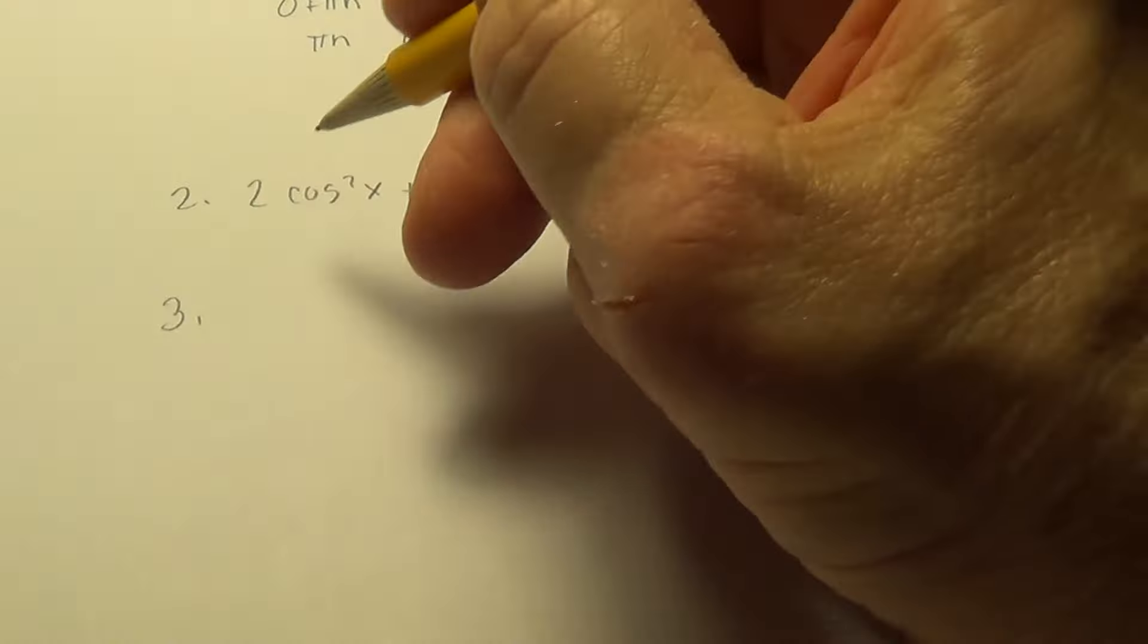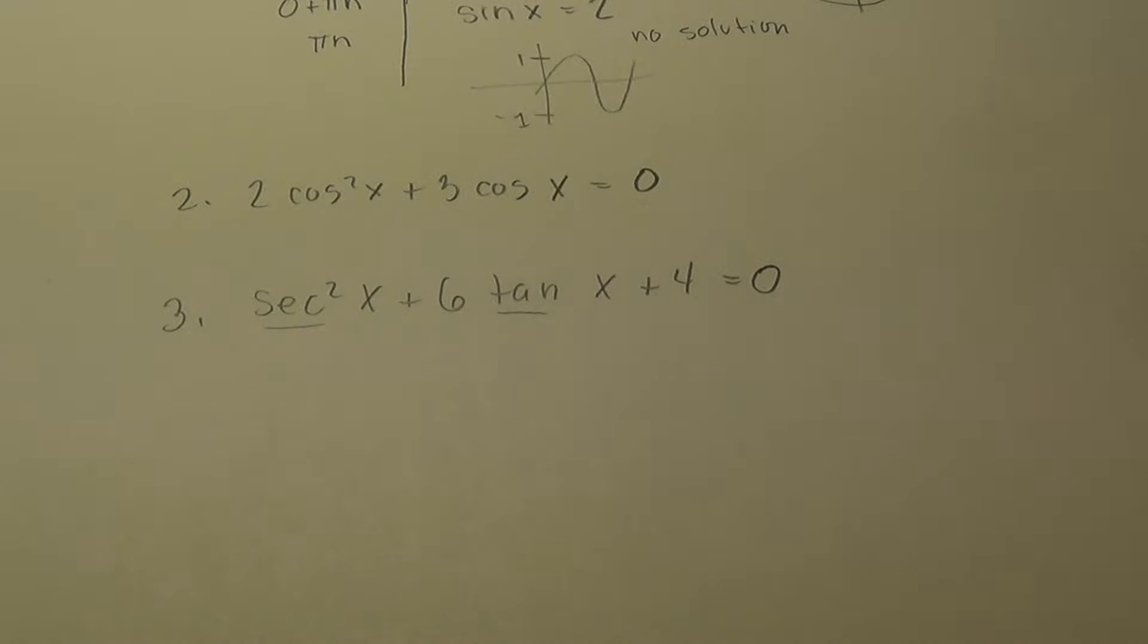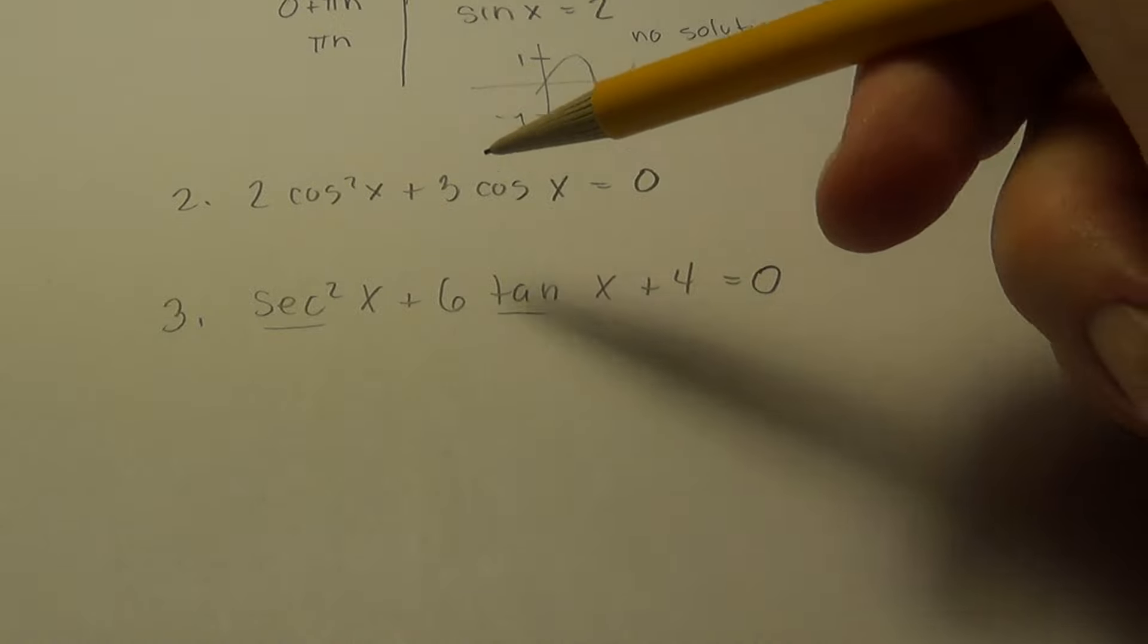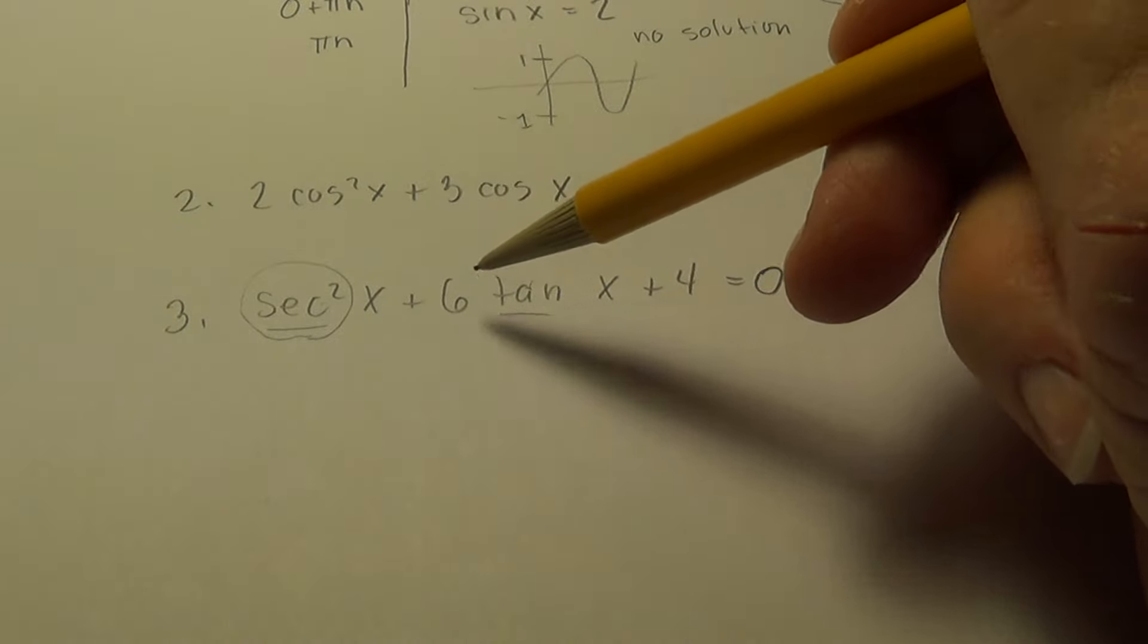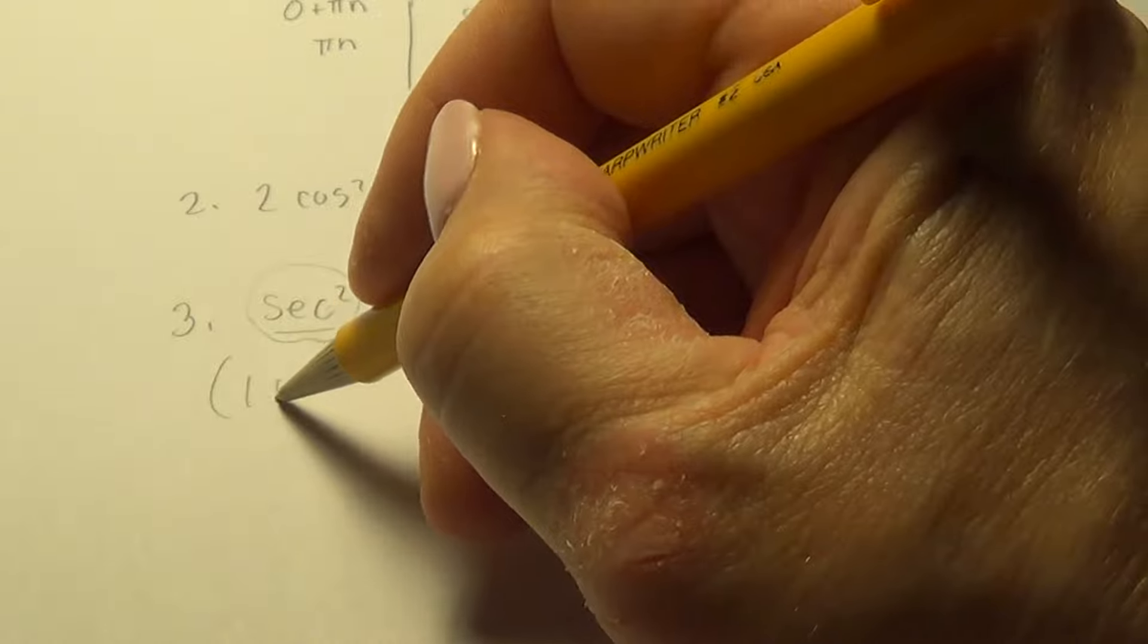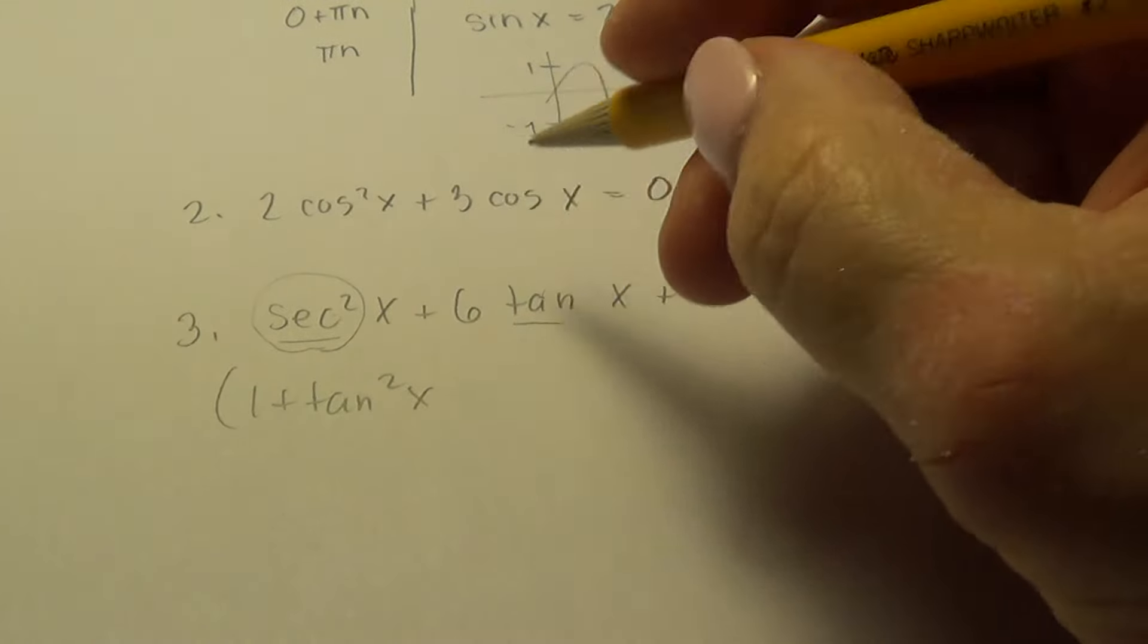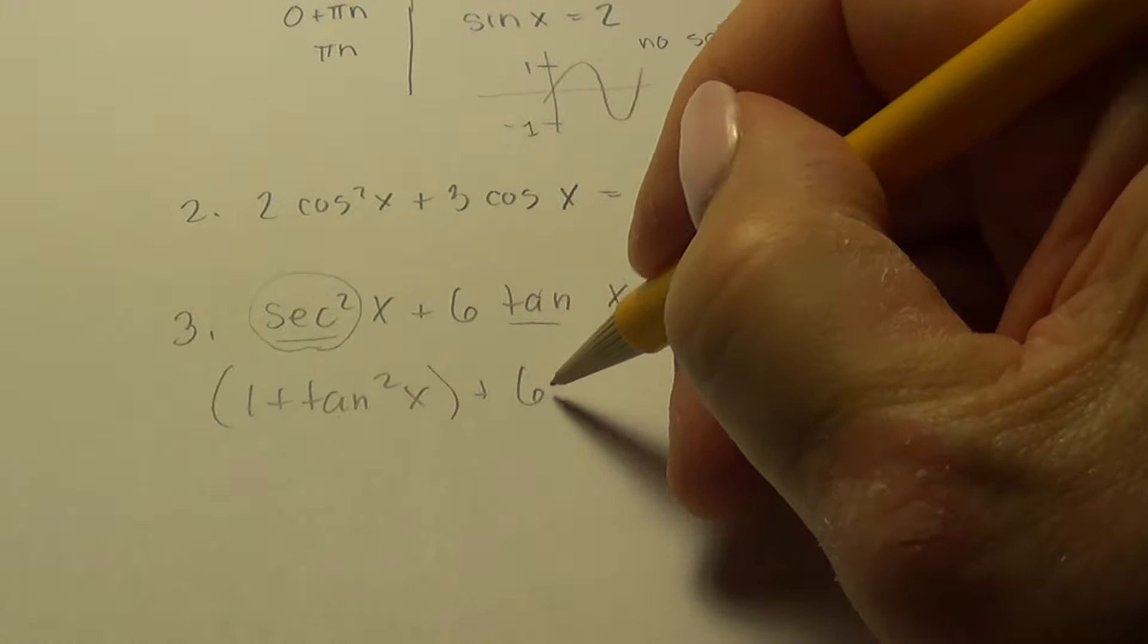sec²x + 6tan x + 4 = 0. Now, on this one, we see two different trig functions, secant and tangent, and we're only allowed to work in one. So we're not going to be able to solve that in two. So I have to think of a trig identity to replace this with so that it has tangent in it. And I know sec²x is 1 + tan²x. So from my Pythagorean identities, I know that.